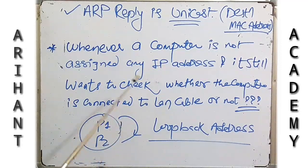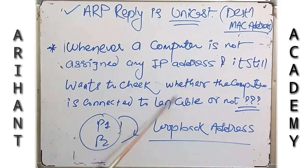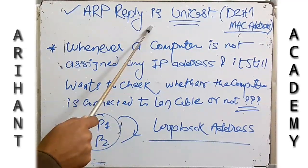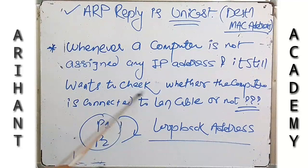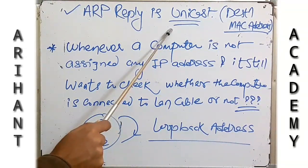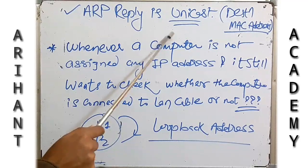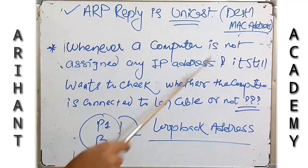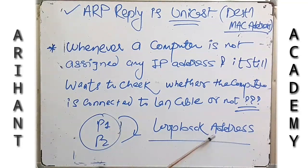Now, whenever a computer is not assigned any IP address — suppose any computer system is there which is not assigned any IP address — and it still wants to check whether the computer is connected to the LAN cable or not. Suppose we have not assigned any IP address to that computer and we still want to check whether it is connected to the whole network. What will we do in that case?